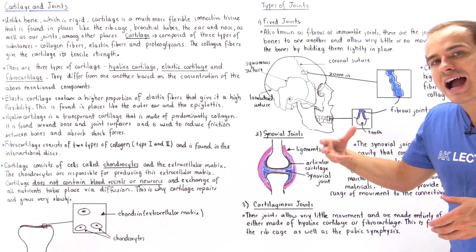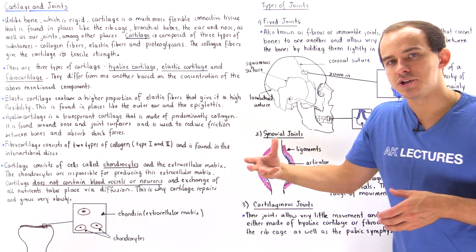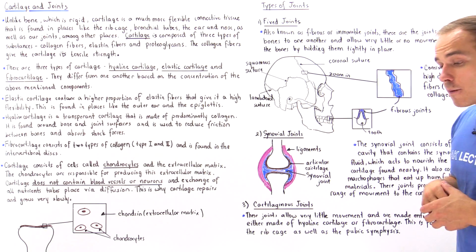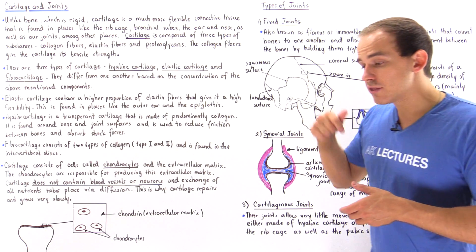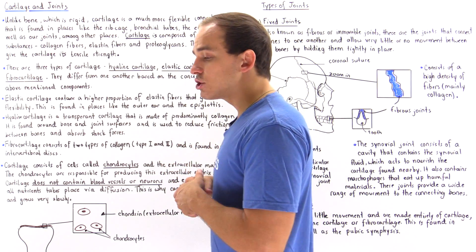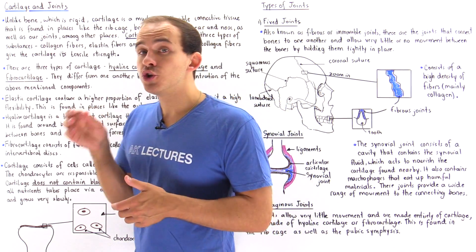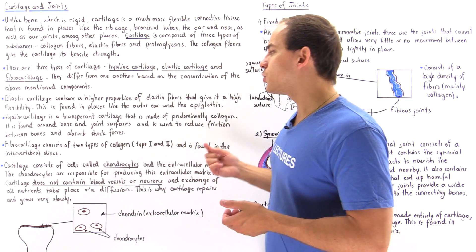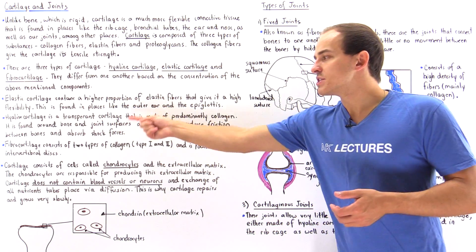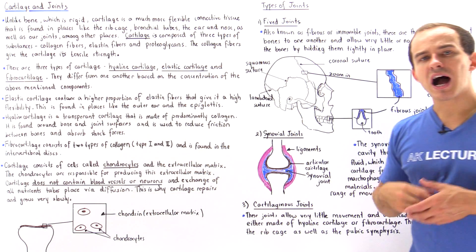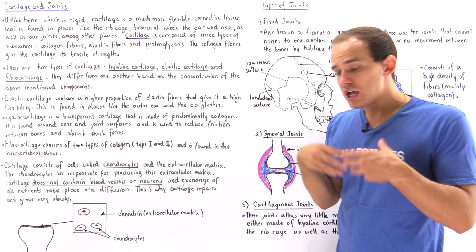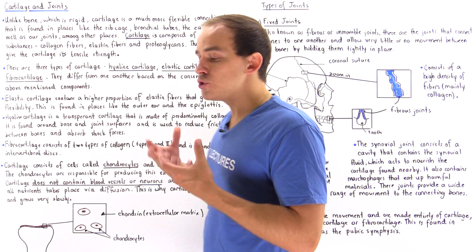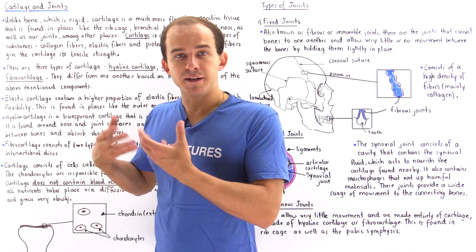The hyaline cartilage is found around our bones and around our joints. It reduces the friction between bones and also absorbs some of the shock as a result of the forces we experience due to our daily movement.